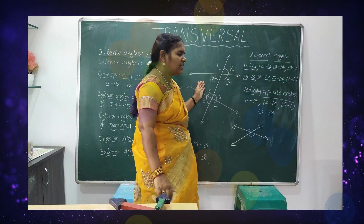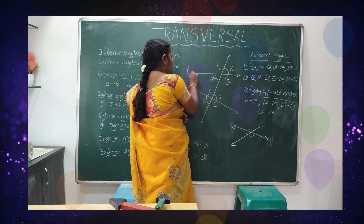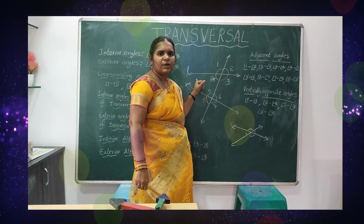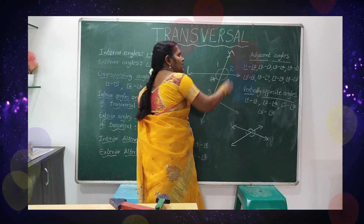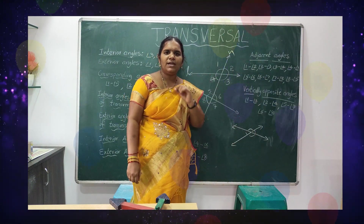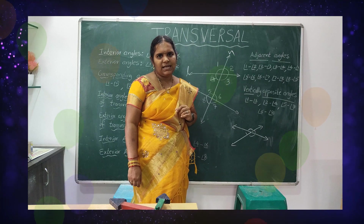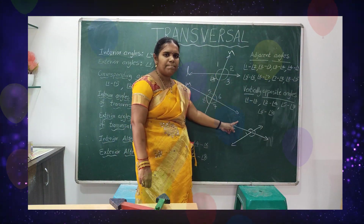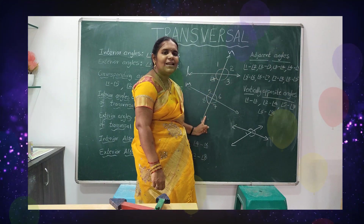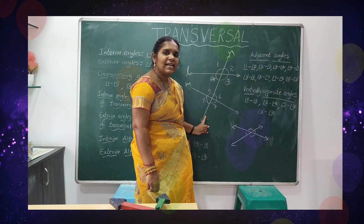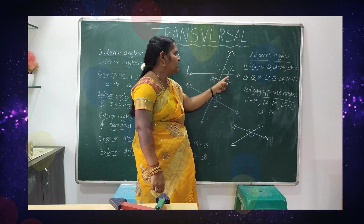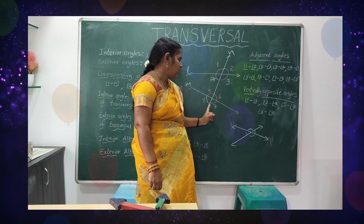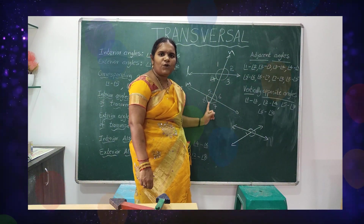Let us consider one example. Line L and line M are intersected by line N — we denote straight lines with small letters. Lines L and M are intersected by line N. See which angles are formed: one, two, three, four, five, six, seven, eight — eight angles formed.